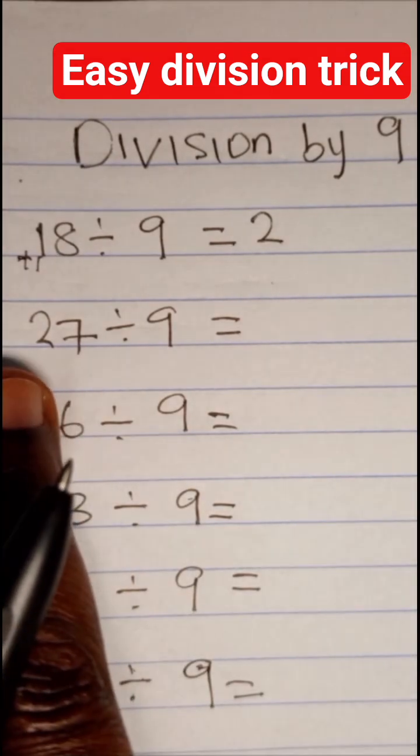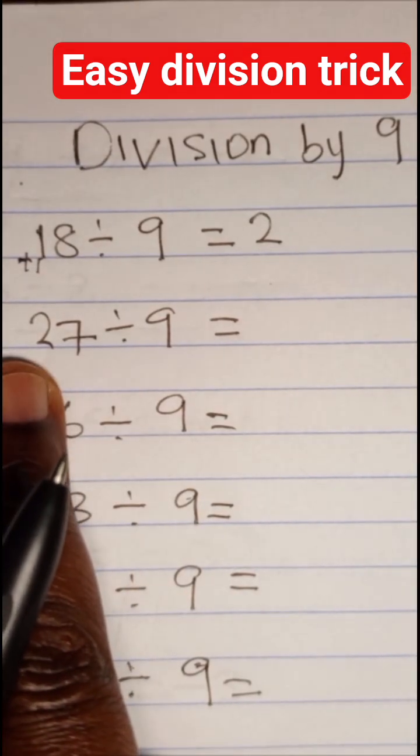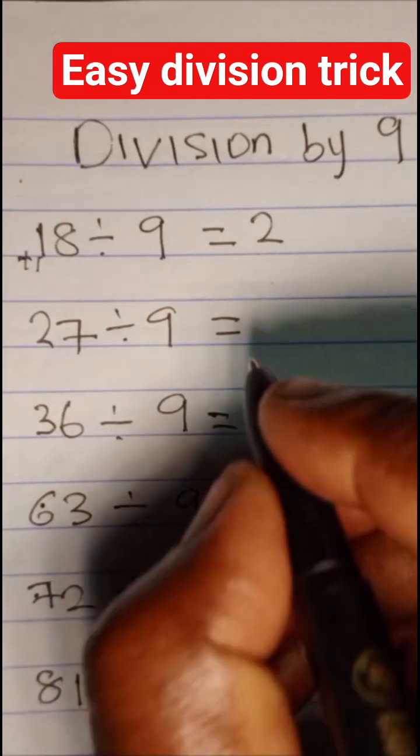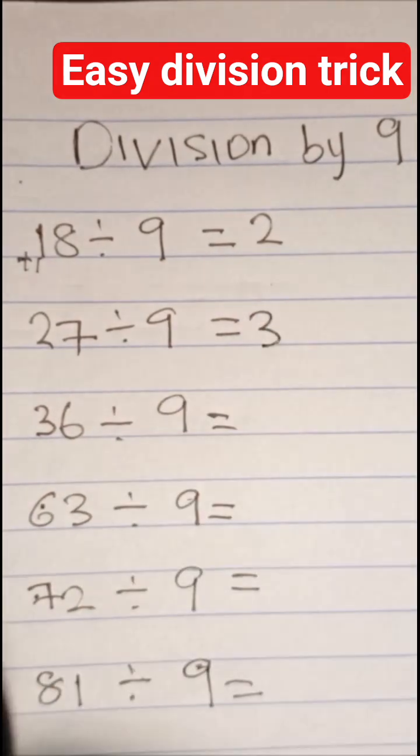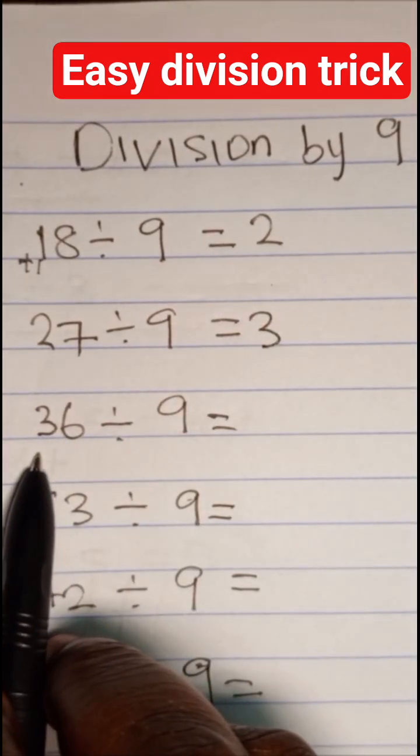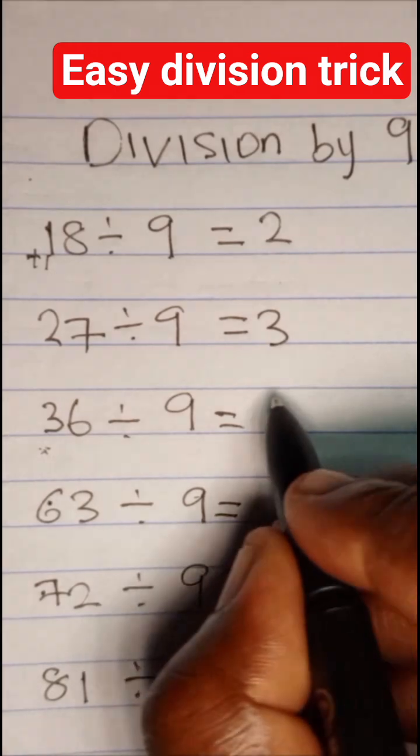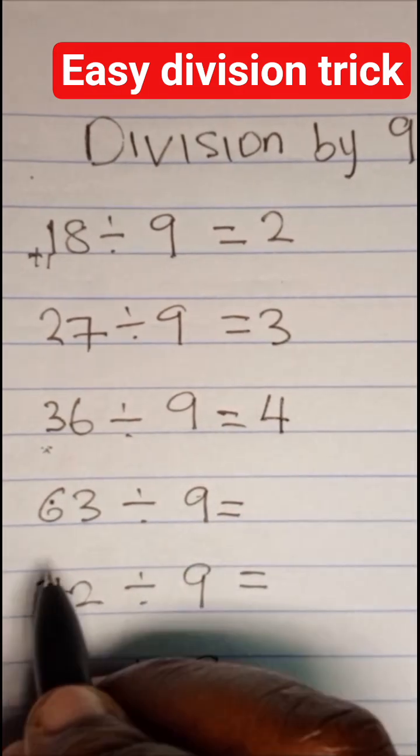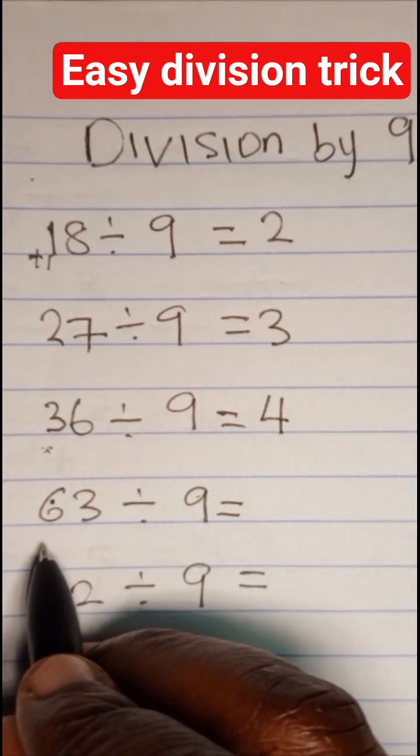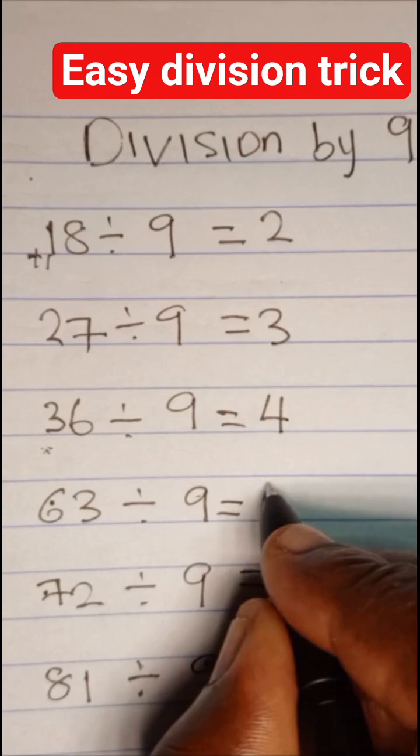So move over to the next one. We'll add one to the first digit number. So that's one plus two, that's three. Add one to the first digit number, one plus three, that will give us four. Add one to the first digit number, one plus six, seven.